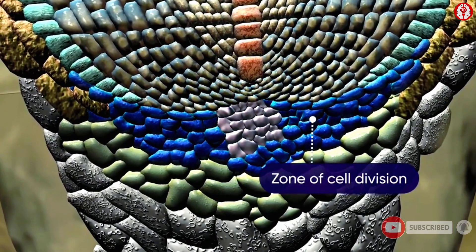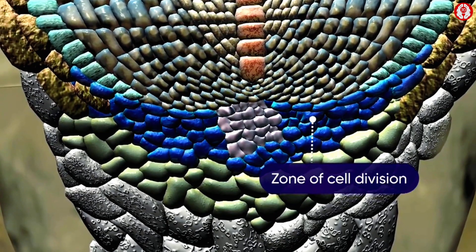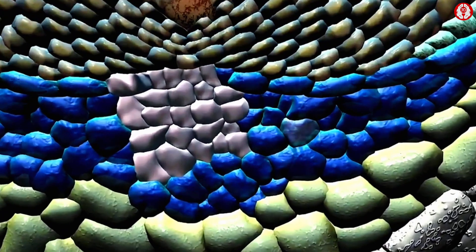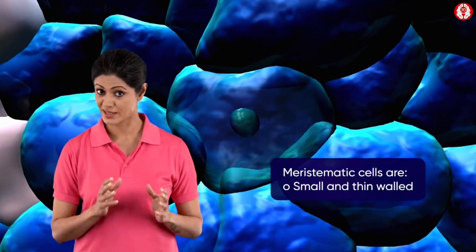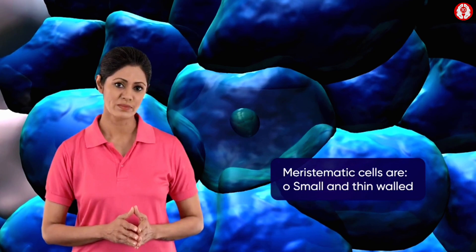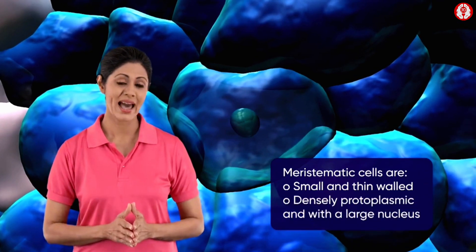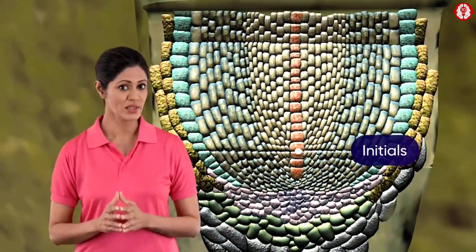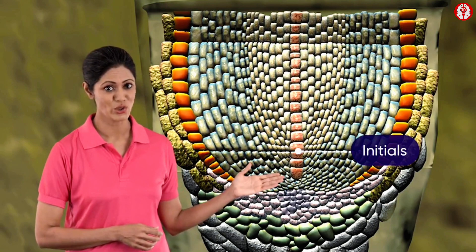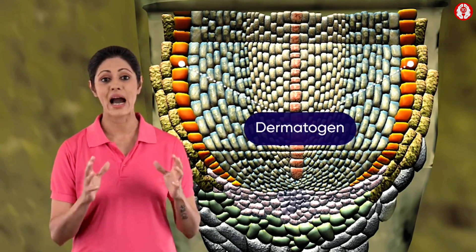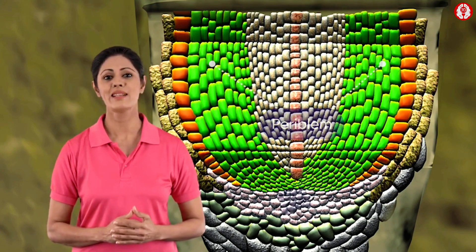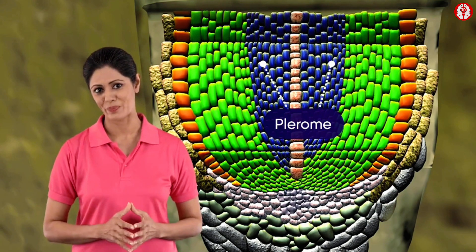Just above the root cap region there is the zone of cell division, also known as the apical meristem. The cells of this region are small, thin-walled, densely protoplasmic, and with a large nucleus. The apical meristem contains groups of cells called initials, which include the dermatogen (the outer group), the peribulum (the median group), and the pleurome (the innermost group).